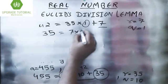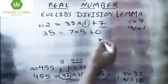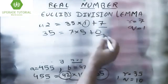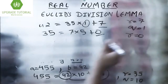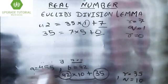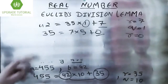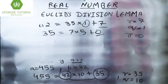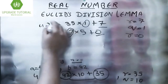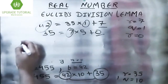We repeat this process. Now 35 = 7 × 5 + 0. Since the remainder becomes 0, r = 0, so we stop this process here. The HCF of 455 and 42 is 7.